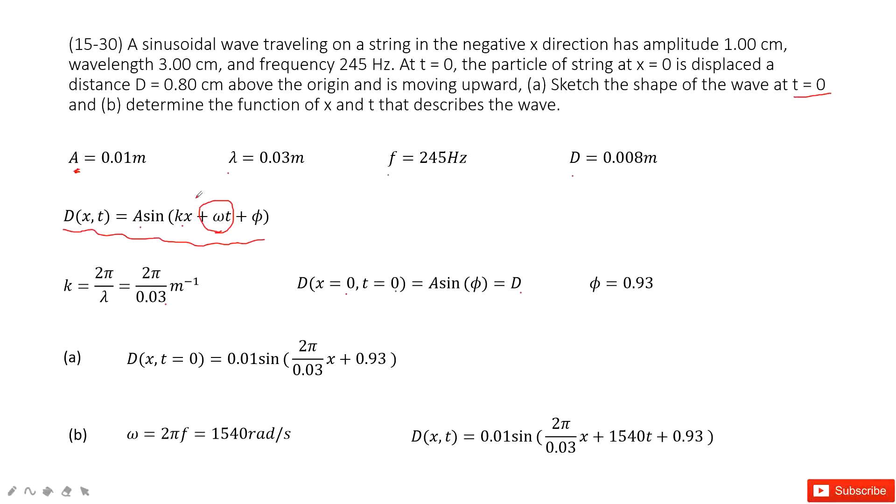So a sin phi equals d. And then in this way, we can find the phi is 0.93.